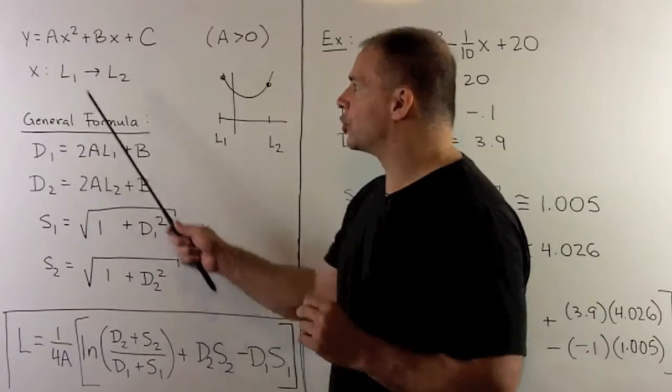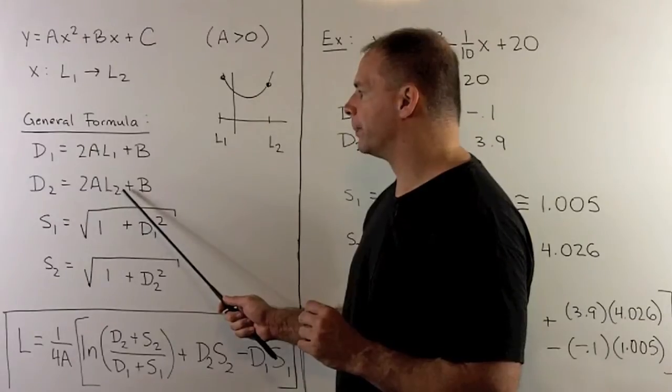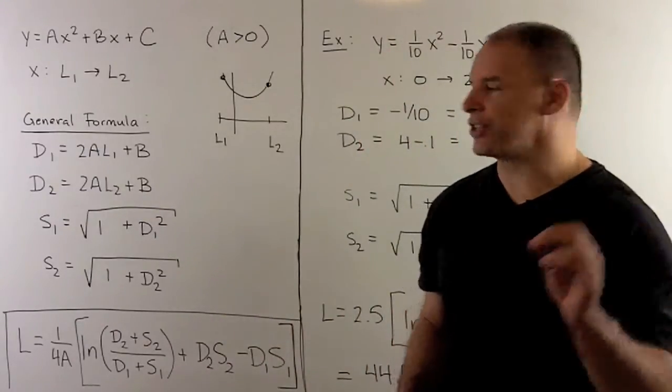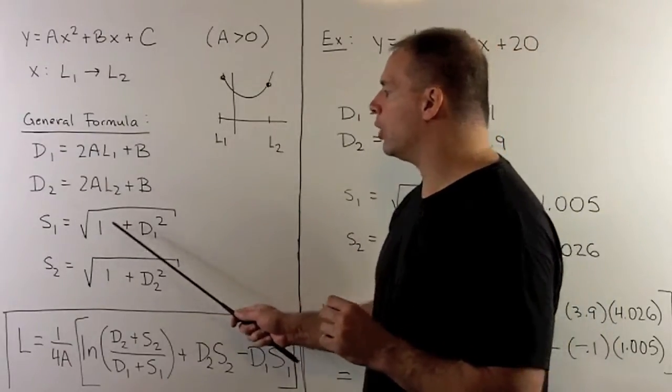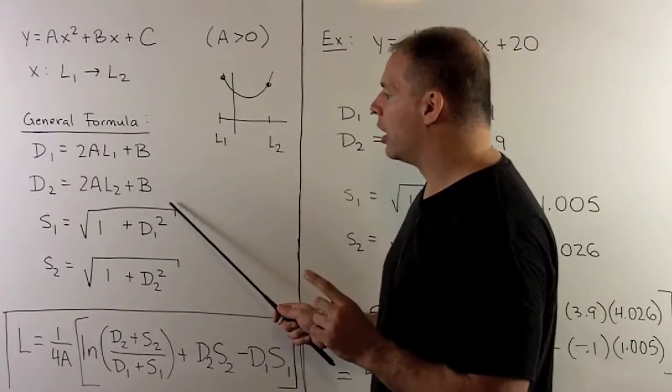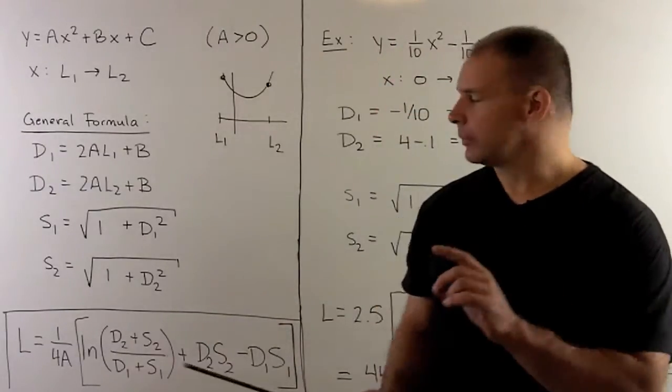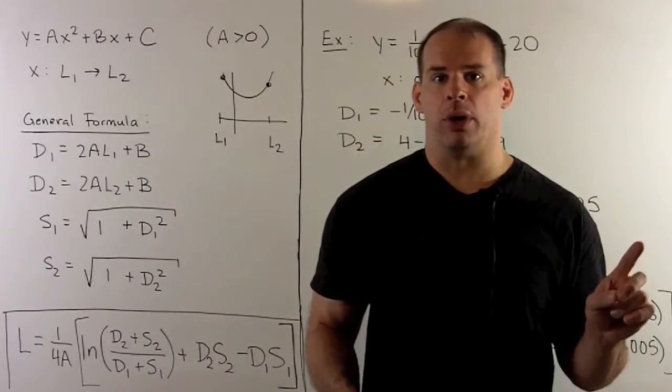These are just the derivative of the function for our parabola evaluated at the endpoints. Once I have those, I compute s1 and s2. If you note, what we have here looks like square root of 1 plus the derivative of our function squared.